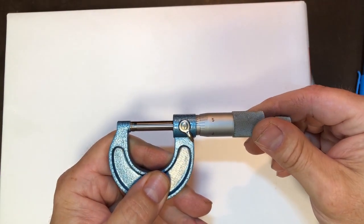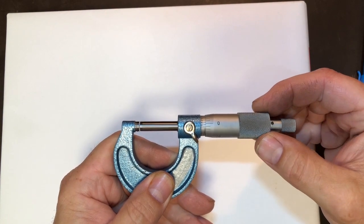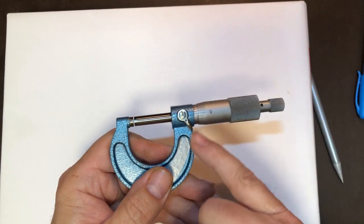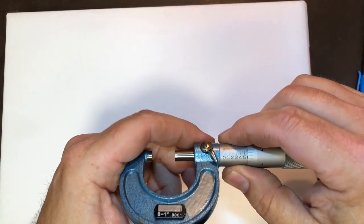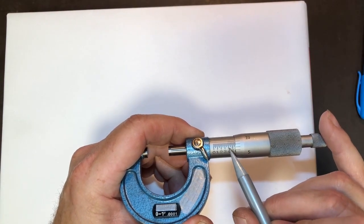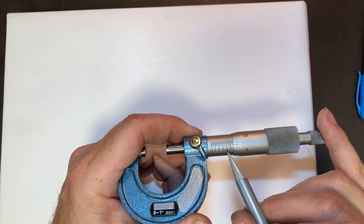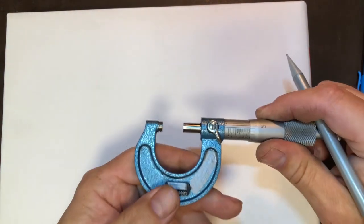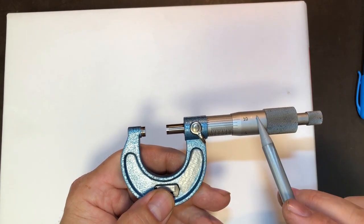Then every, that's one thou, two thou, three thou, four thou, five thou. As we go up all the way, each one is 25 thou. So each of these lines here represent 25 thou. These large lines represent hundreds of thou. On all micrometers, you're only going to get a one inch travel.